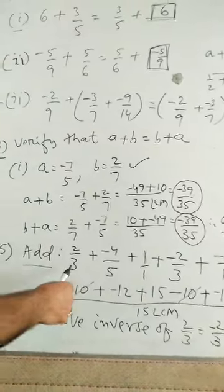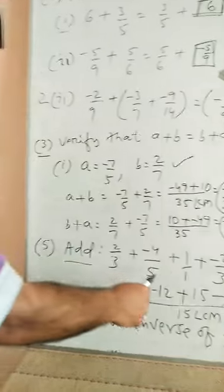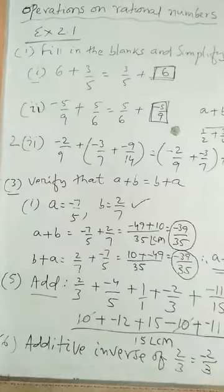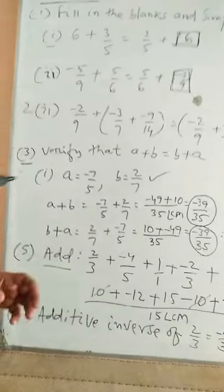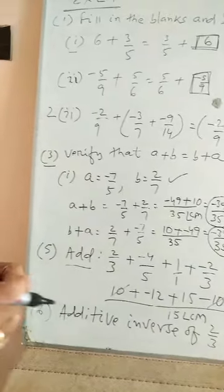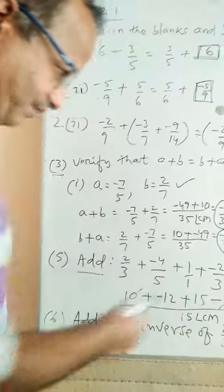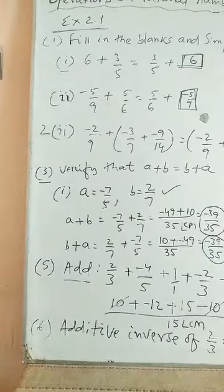So, take the LCM of the denominators, 3, 5, 1, 3, 15. So, you know already, how to find the LCM of some numbers. So, here, on finding the LCM of 3, 5, 1, 3, 15, we get 15 as LCM.